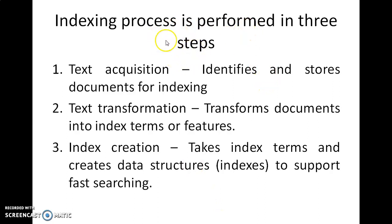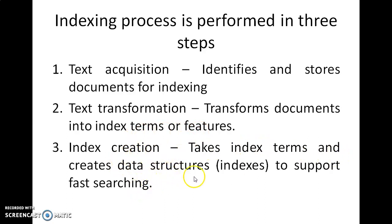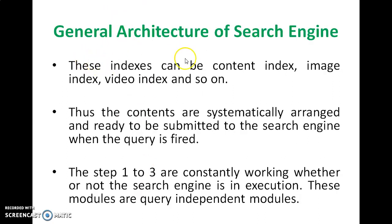The indexing process is performed in three stages: text acquisition, text transformation, and index creation. Text acquisition identifies and stores documents for indexing. Transformation transforms documents into index terms or features. Index creation takes index terms and creates data structures to support fast searching. These indices can be a content index, image index, video index, or whatever it is.